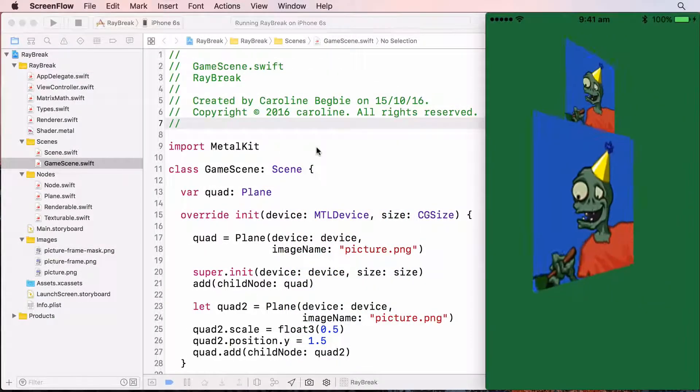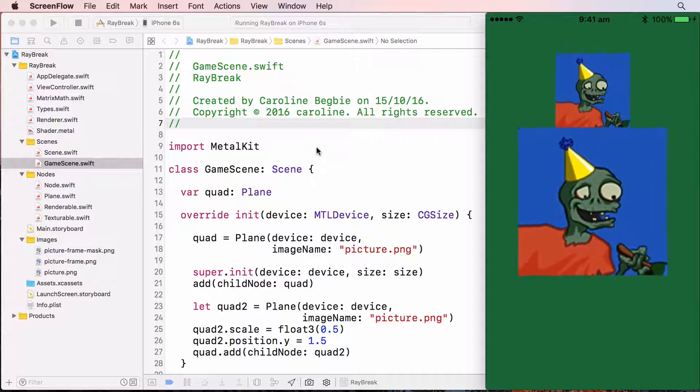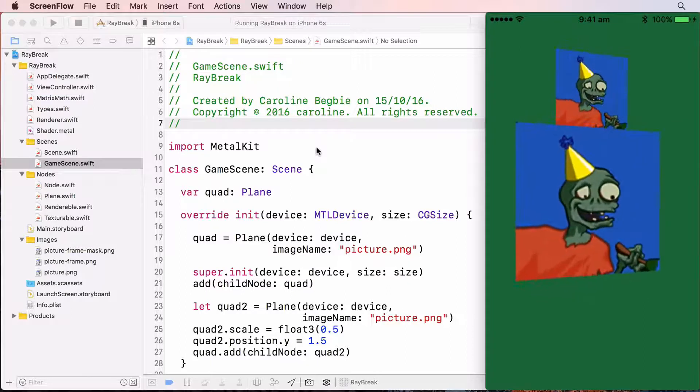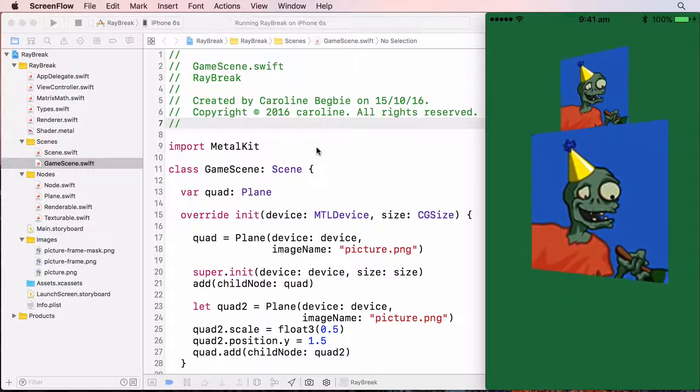This is where we left off from the challenge. We have the zombie rotating in three dimensions. So now that we have that third dimension, we're going to start using three-dimensional models, such as a cube, rather than a flat plane. Apart from the vertices array, the cube will render in exactly the same way as the plane.